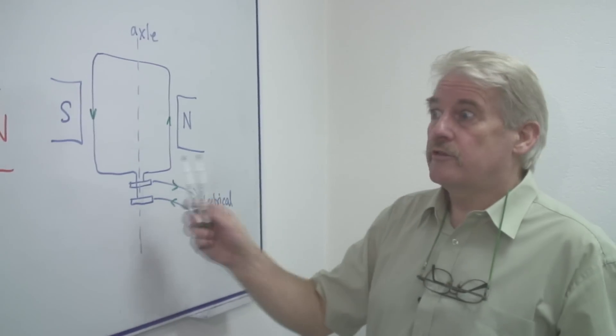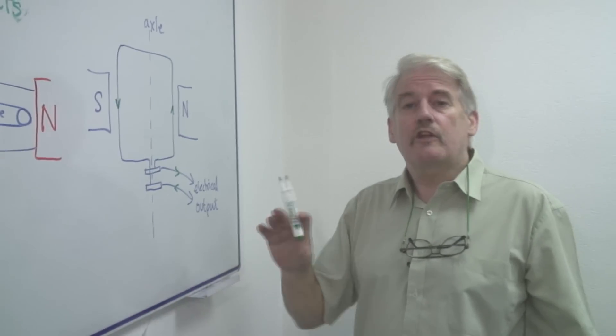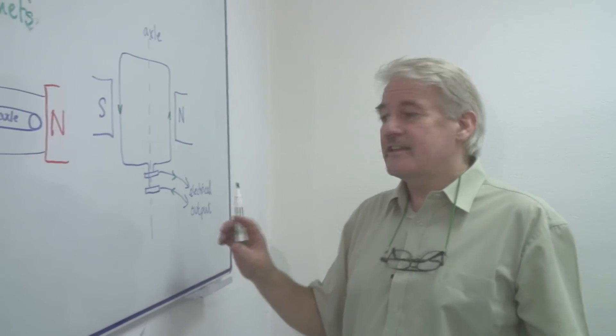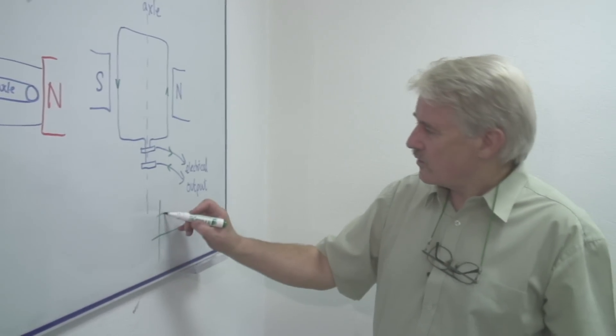Now this will go round and round. And the electrical output actually will not be a steady one. It won't be a steady five volts. It won't look like this.